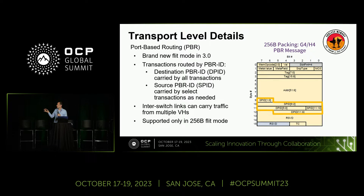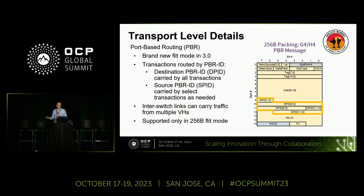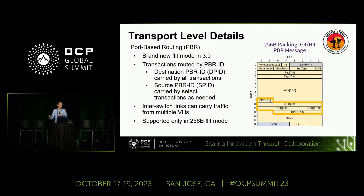The way this was facilitated at the transport level was through the introduction of port-based routing. This is a new flip mode introduced in 3.0 where an ID from that 4K space is included in the transactions, so that within the fabric we can start routing by ID and don't need to worry about address collisions when you have multiple hosts. They don't need to share an address space — everything's routed among IDs. Every transaction carries a destination PBR ID, or DPID, and as needed, a source PBR ID, or SPID. A request has both DPID and SPID, but a completion only really needs a DPID.